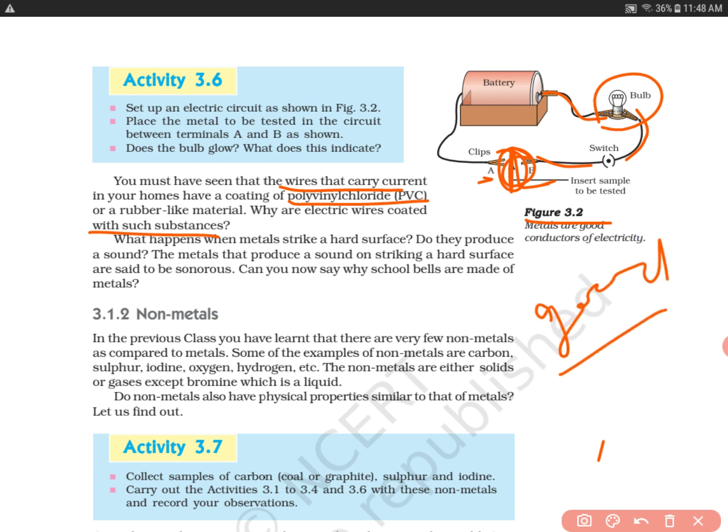We learned that metals are good conductors of electricity. This means that if the copper wire is bare, if it doesn't have a coating of rubber or insulating material, then whoever directly touches it can get an electric shock.